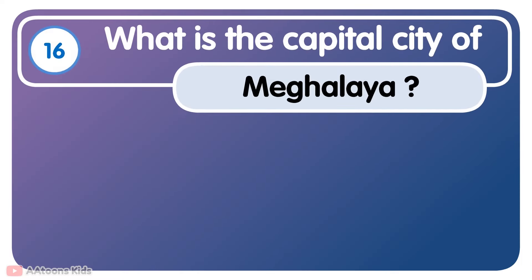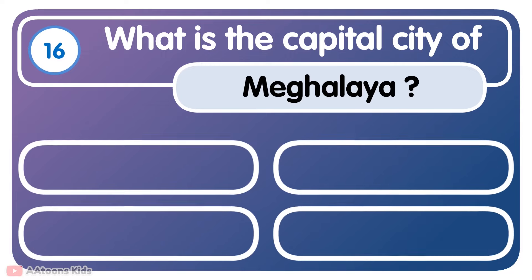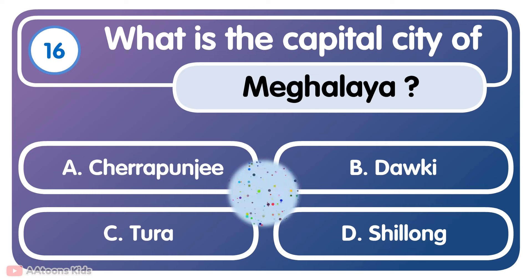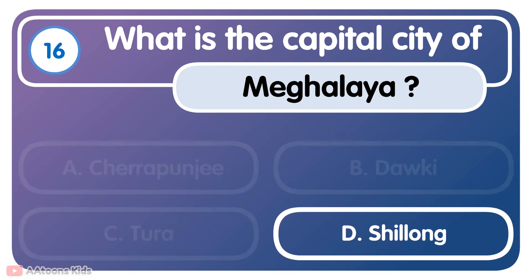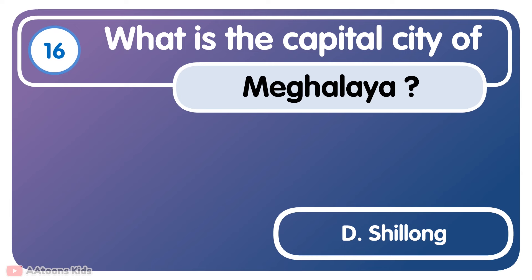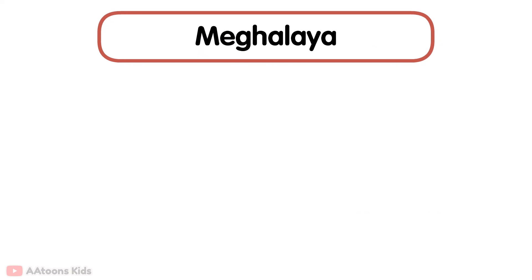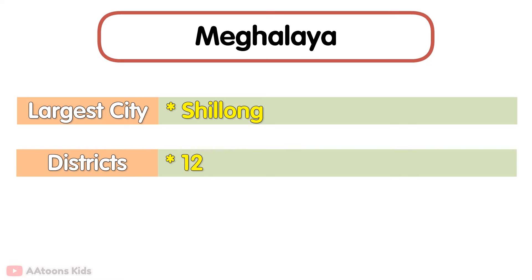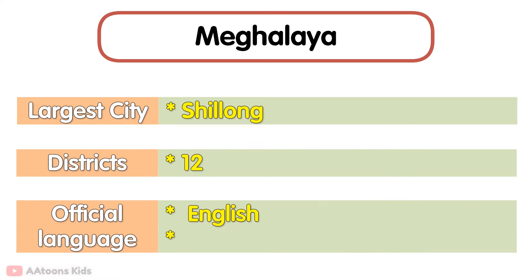What is the capital city of Meghalaya? Shillong. Shillong is the capital city of Meghalaya. The largest city in Meghalaya is Shillong. It has a total of 12 districts. Its official language is English. Cherrapunji holds the world record for the highest annual rainfall and is located in Meghalaya.